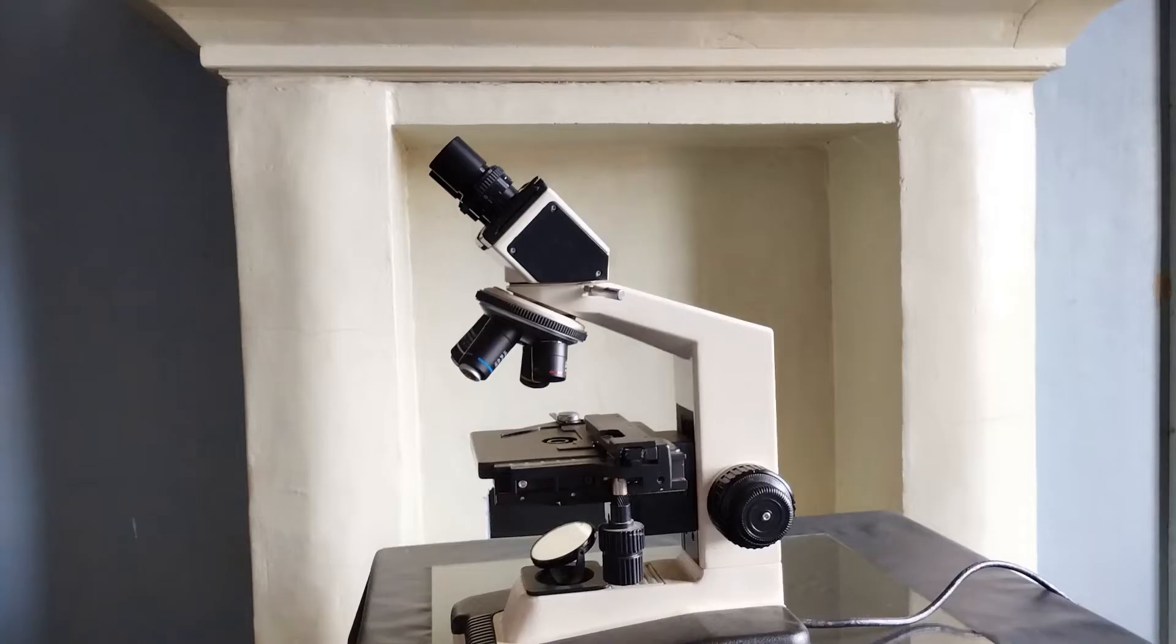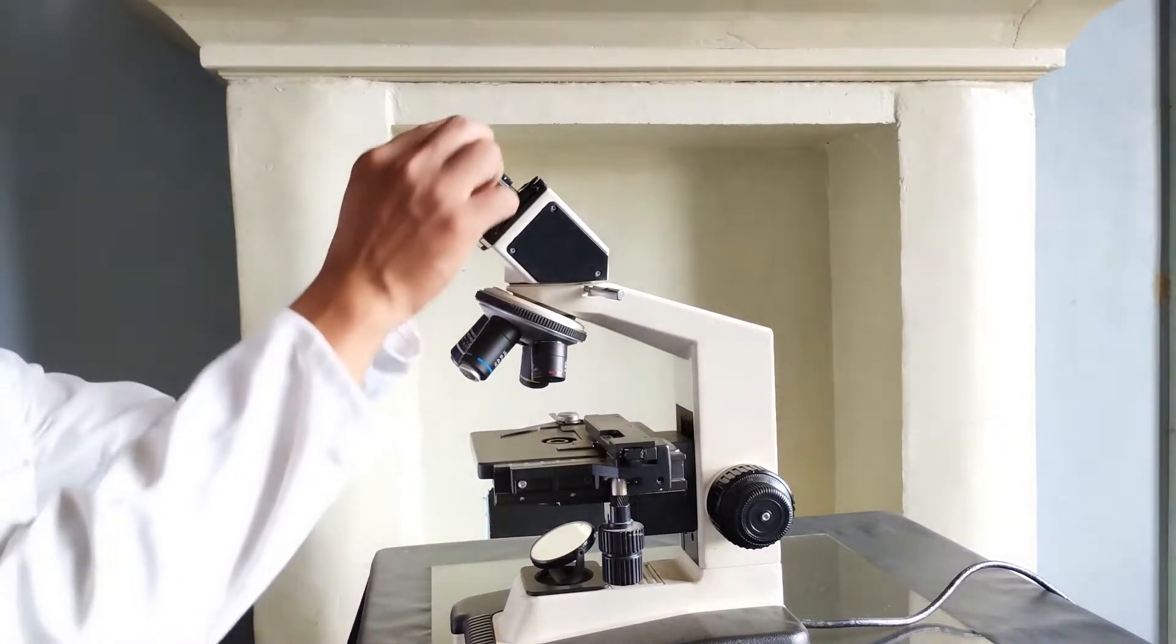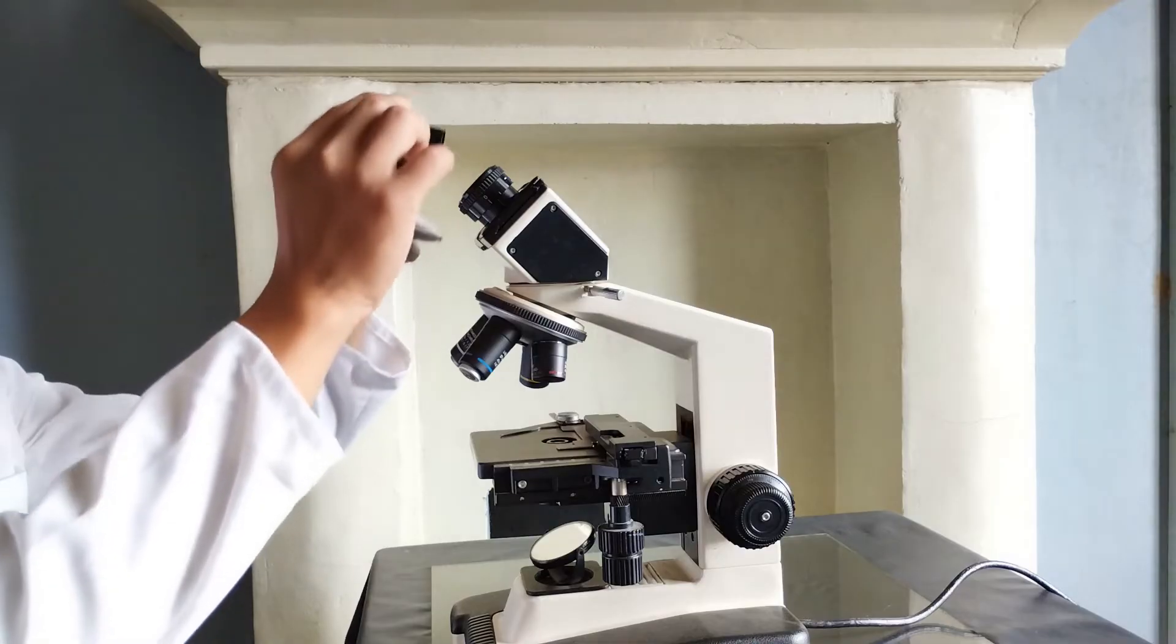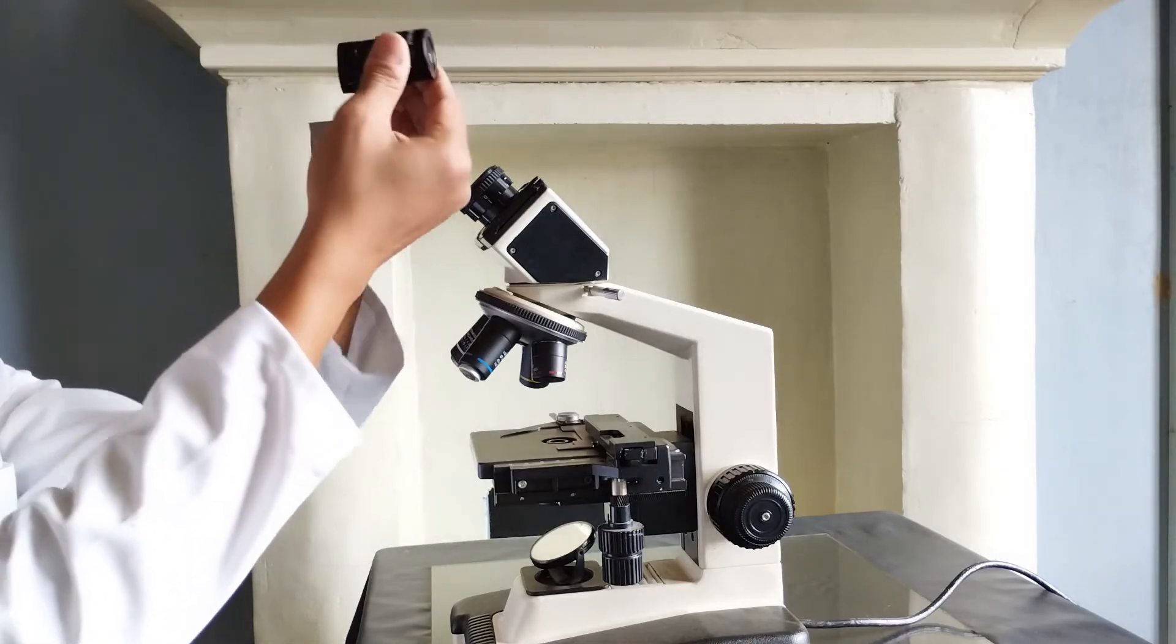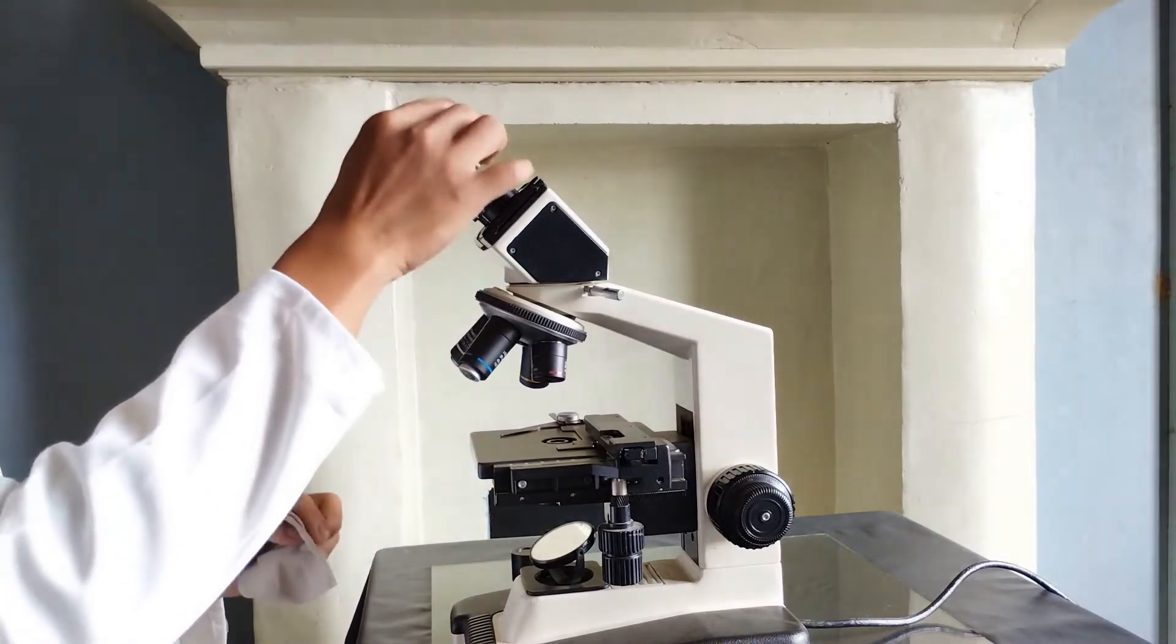Once the microscope is correctly positioned, the first thing you need to do is to check both the eyepieces. For this, remove them from their positions and check both the upper and lower lenses for dust and dirt. If present, use a lens cloth or lens paper to wipe them clean. Reinsert the eyepieces once cleaned.